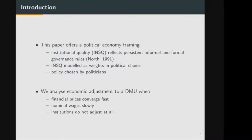The second figure shows that this measure of institutional quality did not converge over time. I averaged over core and periphery countries and plotted from 1996 to 2018. It didn't converge — if anything, it seems to even diverge. That brings us to the second question: what are the redistributive consequences across and within countries of such persistent institutional differences? We offer a political economy framing, where institutional quality reflects persistent informal and formal constraints on governance rules, in the spirit of Douglas North's work.